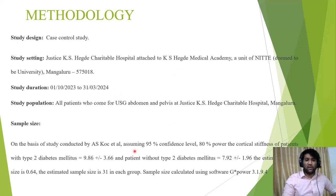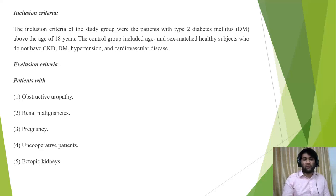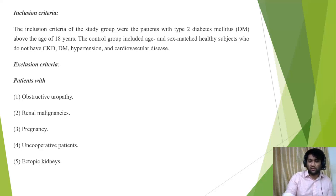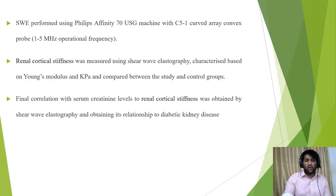Based on a prior study by Coquita, we obtained a sample size of 31 in each group — 31 controls and 31 cases. Inclusion criteria were all patients with type 2 diabetes mellitus above 18 years of age. Controls were age- and sex-matched healthy subjects without CKD, diabetes, hypertension, or cardiovascular disease. Exclusion criteria included obstructive uropathy, renal malignancies, pregnancy, uncooperative patients, and ectopic kidneys.